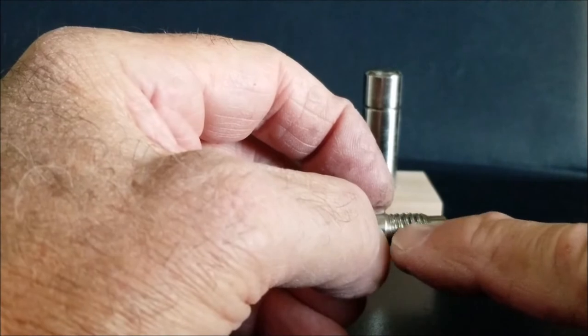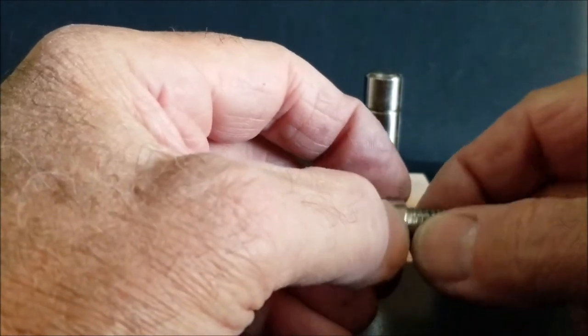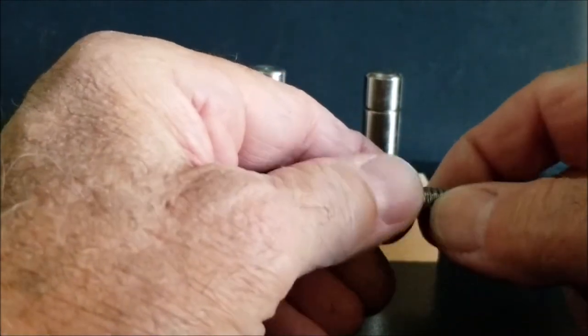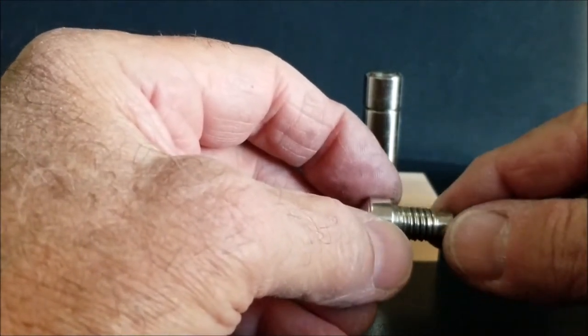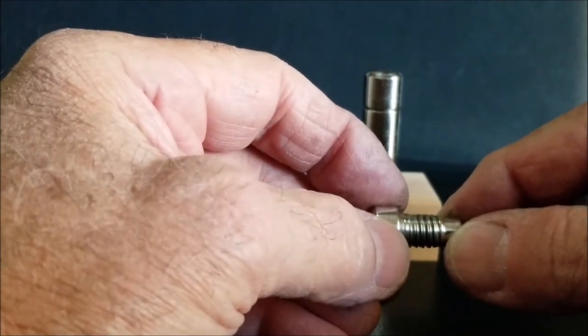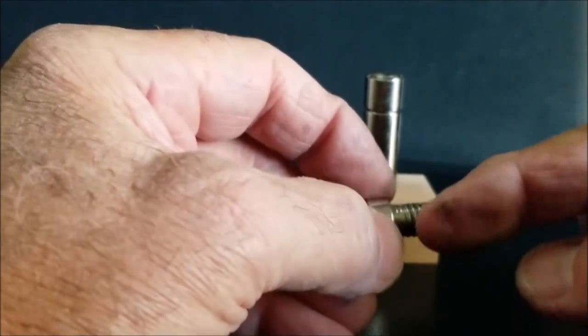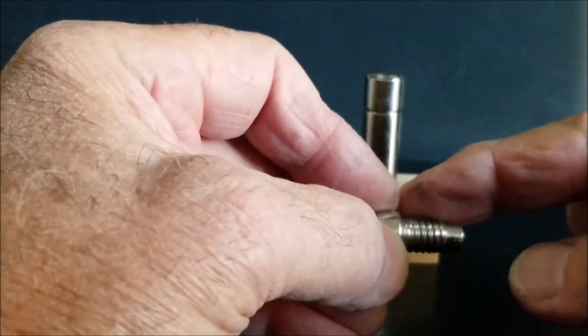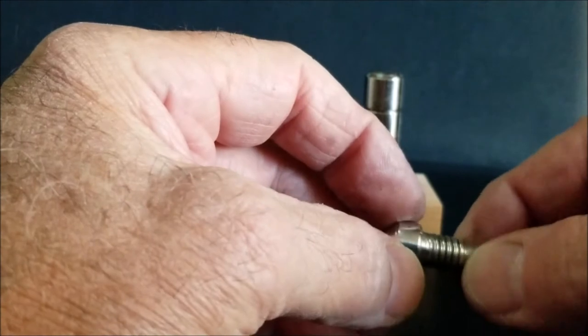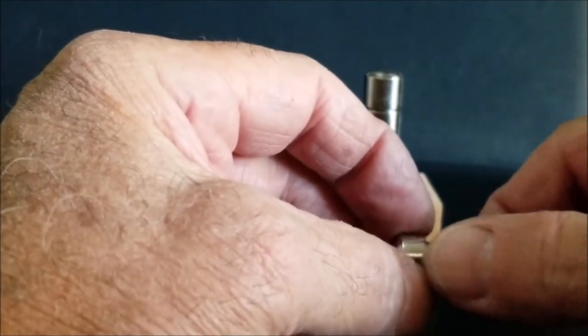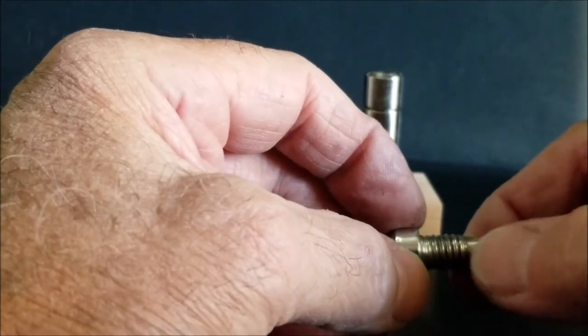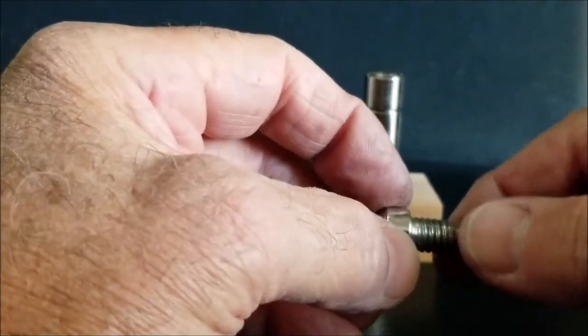So what I wound up doing was taking a die, again 3/8 by 16 national coarse, and threading a die over my remaining or my cut threads to further accentuate them and turn them into a standard depth.